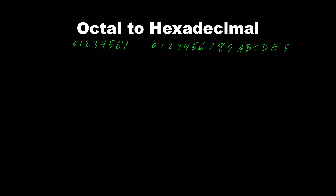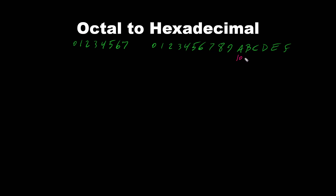To keep single digits in hexadecimal, letters A, B, C, D, E, F are used. A hexadecimal A is equivalent to 10 in decimal, B is 11, C is 12, and so on.